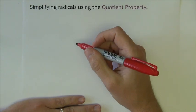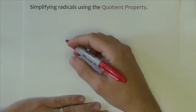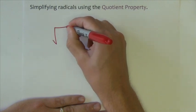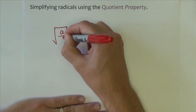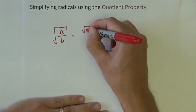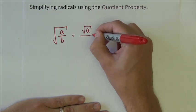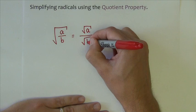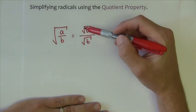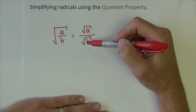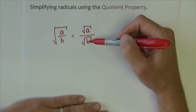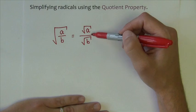Another property for simplifying radicals that we often use is called quotient property. Similar to the product property, it says that if we have a quotient of two numbers under a radical, that's the same as the radical of the numerator divided by the radical of the denominator. We're allowed to split this up into two separate radicals. Therefore, we can simplify each one individually of the other one.